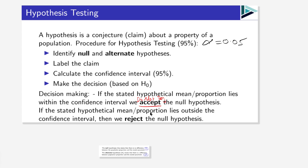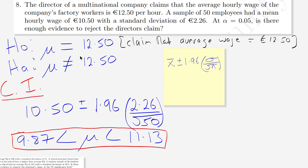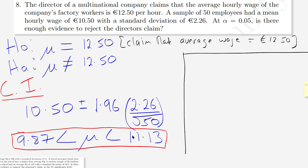It's probably better to say we 'do not reject' rather than 'accept' the null hypothesis. If the stated hypothetical mean or proportion lies outside the confidence interval, then we reject the null hypothesis. Our null hypothesis is that the average is €12.50, but our confidence interval tells us we're 95% sure the average is somewhere between €9.87 and €11.13 — therefore we reject the null hypothesis.